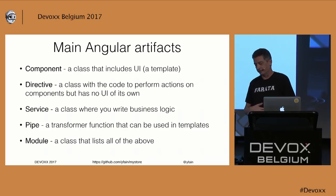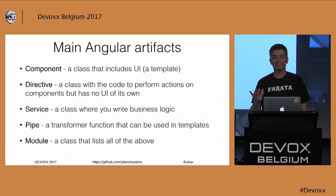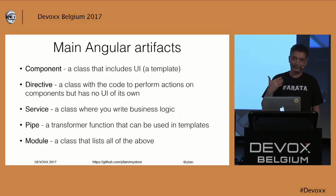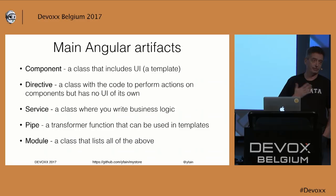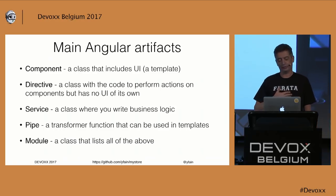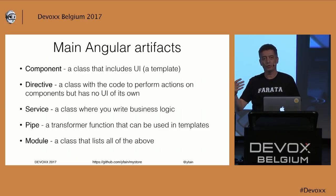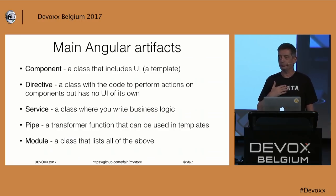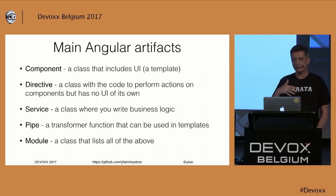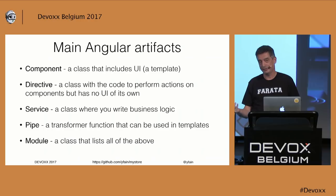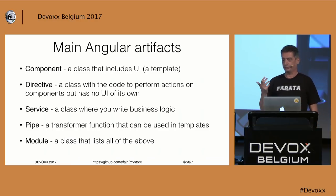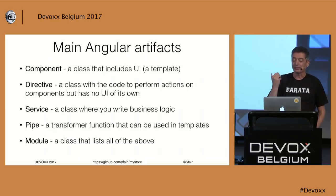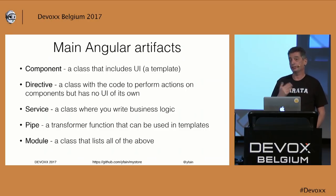What are the main artifacts of the Angular framework? A component is the main one — it's a class with an annotation. In TypeScript they call them decorators, but if you're a Java developer, think of it as an annotation — metadata about your class. A component is a class with UI, and you specify the UI in the decorator. A directive is also a class with a different decorator, but it doesn't have its own UI — it can manipulate UI of other components. A service is a class where you put your business logic. Services are often used for communication with the server and for bringing data, and they are injected into your components or other services using DI — dependency injection.